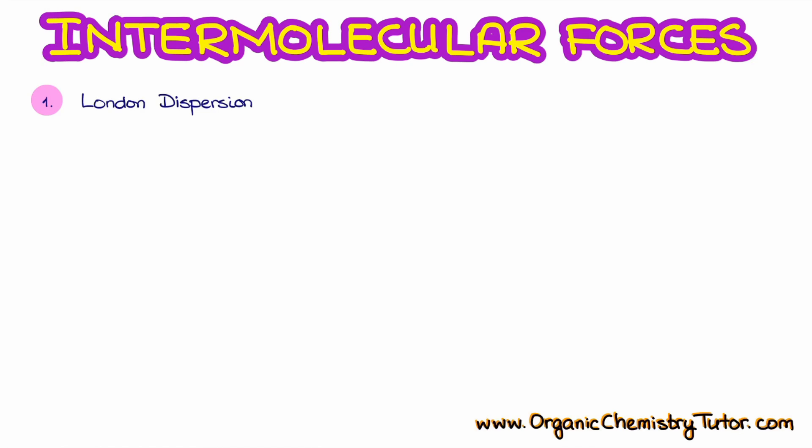The first intermolecular force I want to talk about is the London dispersion force. This is a type of interaction that occurs between two molecules when they approach each other, and the electron clouds on the atoms experience a slight polarization. By themselves the molecules are completely neutral, but once they approach each other we start developing partial positive and partial negative charges in the electron clouds, and that brings about attraction — that's what we call London dispersion forces.